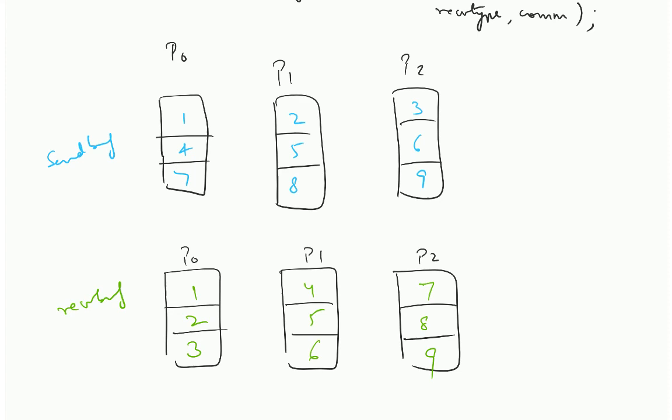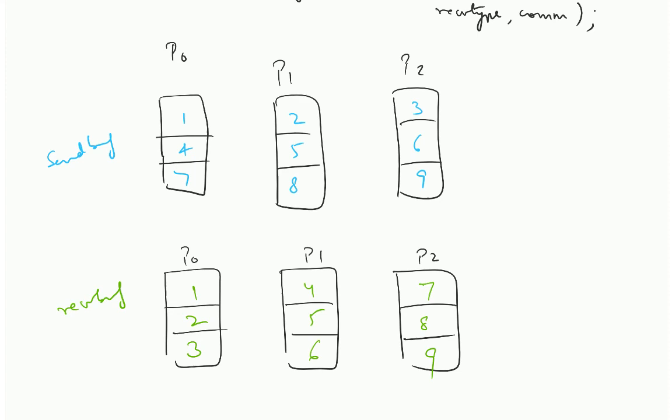Think of it this way. If I just combine this up, it is a matrix. If I just look at it together with the rows as being the element numbers and the columns being the processors, if I put it together this entire thing is a matrix. It is nothing but a transpose of this matrix.